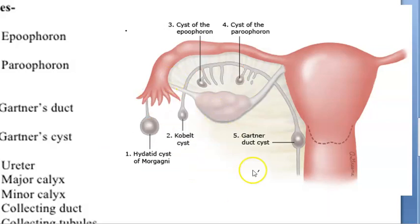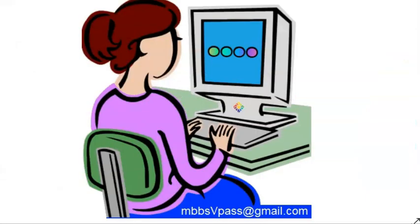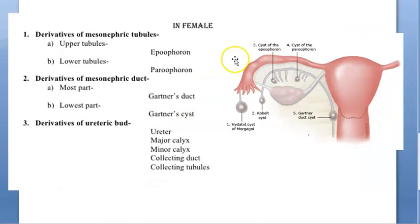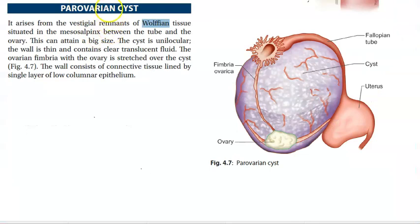So why is this topic important? Because the Gartner's duct cyst, if it appears on the anterior vaginal wall, you may think it is a cystocele — that is urinary bladder prolapse. So when reading about uterine prolapse and cystocele, it might not actually be a cystocele; it may be a Gartner's duct cyst — that's why you should know this. There is also the parovarian cyst, which is also from Wolffian tissue.